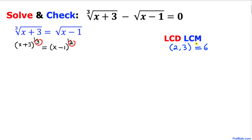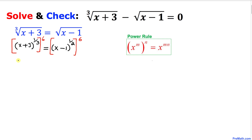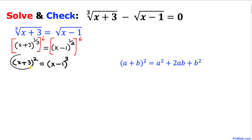Now let's focus on the numbers 3 and 2. The least common denominator, or least common multiple, of these two numbers is 6. So let's take power 6 on both sides. Using the power rule, we multiply the exponents: the left hand side becomes x plus 3 to the power of 1/3 times 6, which is 2, and the right hand side becomes x minus 1 to the power of 3.